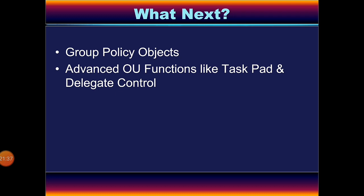अभी तक हमने इस lecture में study किया: what is network administration, network administrator का role क्या होता है, Active Directory क्या होती है, इसका structure क्या होता है, different type of objects क्या होते हैं, और organizational units को कैसे create किया जाता है। In my next lecture I am going to discuss about Group Policy Objects and advanced OU functions like taskpad and delegate control।